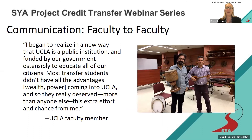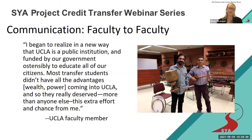Eileen shares a quote from a UCLA faculty member who said: 'I began to realize in a new way that UCLA is a public institution, funded by our government, ostensibly to educate all of our citizens.' This faculty member acknowledged that most transfer students didn't have all the advantages of wealth, power, or family position coming to UCLA, and therefore deserved extra effort and opportunity. Showing data about students' less advantaged backgrounds transformed this faculty member from a transfer skeptic into a transfer champion — a powerful moment for Eileen.